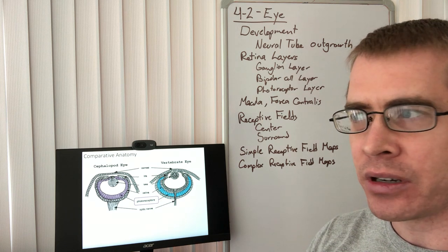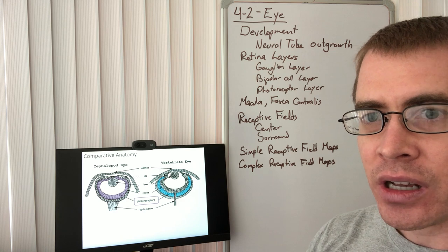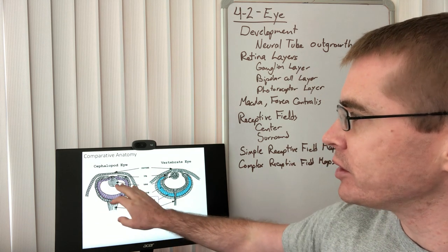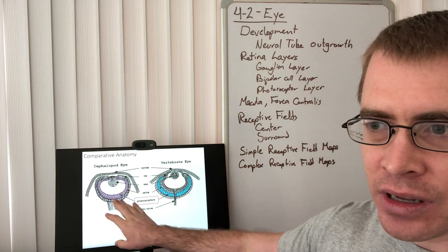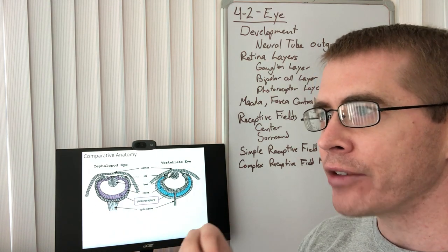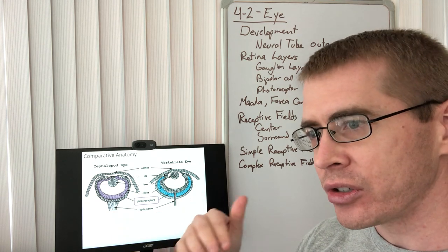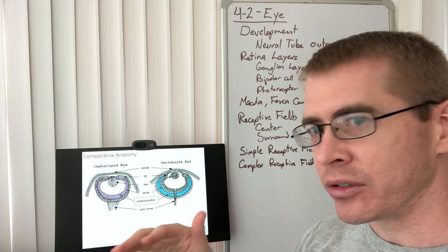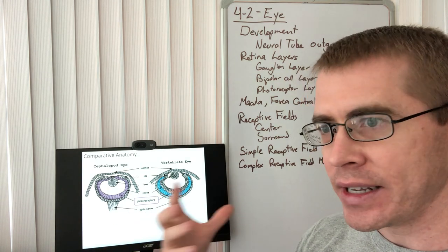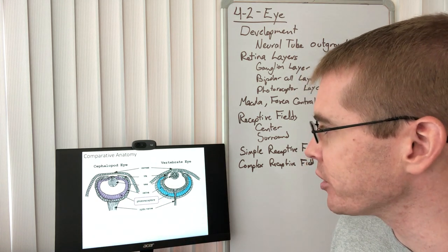There are actually seven different types of eye organizations that have been identified. Cephalopods, because of their eye organization, have much higher acuity and sharper vision, and can also see different wavelengths of light than our eye can see. Birds and insects also see different wavelengths and have different visual properties.